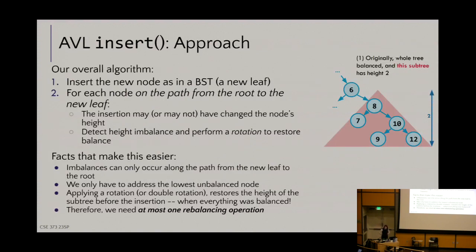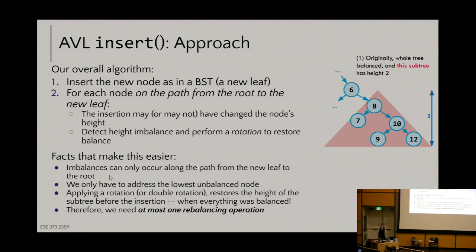Imbalances can only really occur along the path from the new leaf to the root, because that's the only part of the tree impacted. Whatever is to the other side of any branch point goes untouched. We only have to address the lowest unbalanced node, apply the rotation, which restores the subtree height — so in practice we're almost always guaranteed a single rotation, making AVL performance very nice.